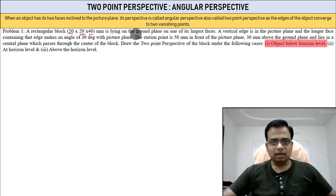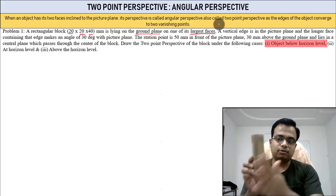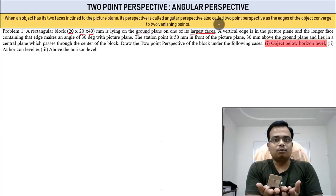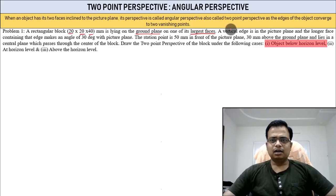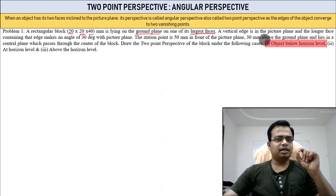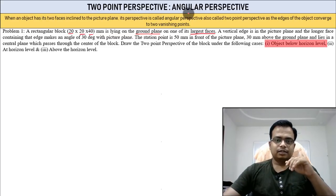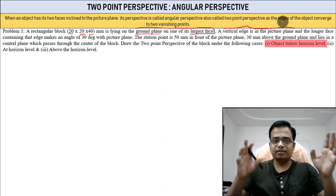There are four largest faces — this one, this one, this one, and this one — each 20 by 40. The object is lying on the ground plane. Secondly, a vertical edge is in the picture plane. You need to keep both things in mind: one of the largest faces is on the ground, and a vertical edge is in the picture plane.